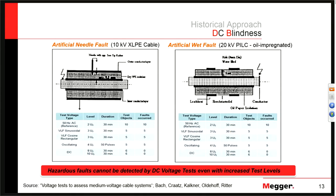VLF is much more effective at finding these faults at much lower voltages. This was true for both extruded cables and PILC cables. For PILC cables, they drilled a hole and filled it with water — same ultimate result: DC was 0%, AC was 100%.